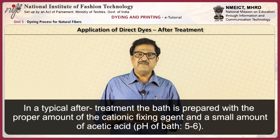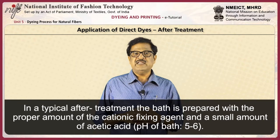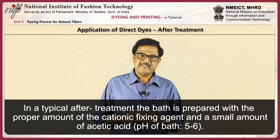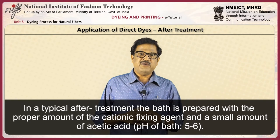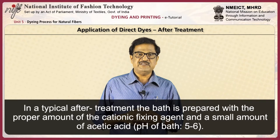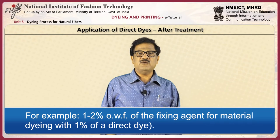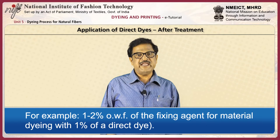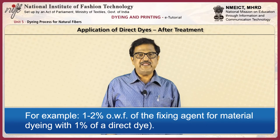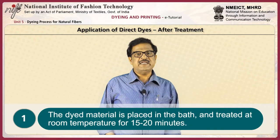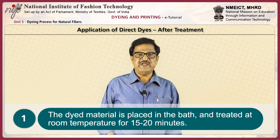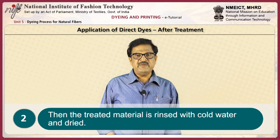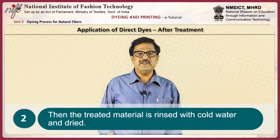In a typical after treatment, the bath is prepared with the proper amount of cationic fixing agent and a small amount of acetic acid. The pH of the bath is to be maintained between 5 to 6. For example, 1 to 2 percent on weight of fiber of the fixing agent for material dyed with 1 percent of a direct dye. The dyed material is placed in the dye bath and treated at room temperature for 15 to 20 minutes, then rinsed with cold water and dried.